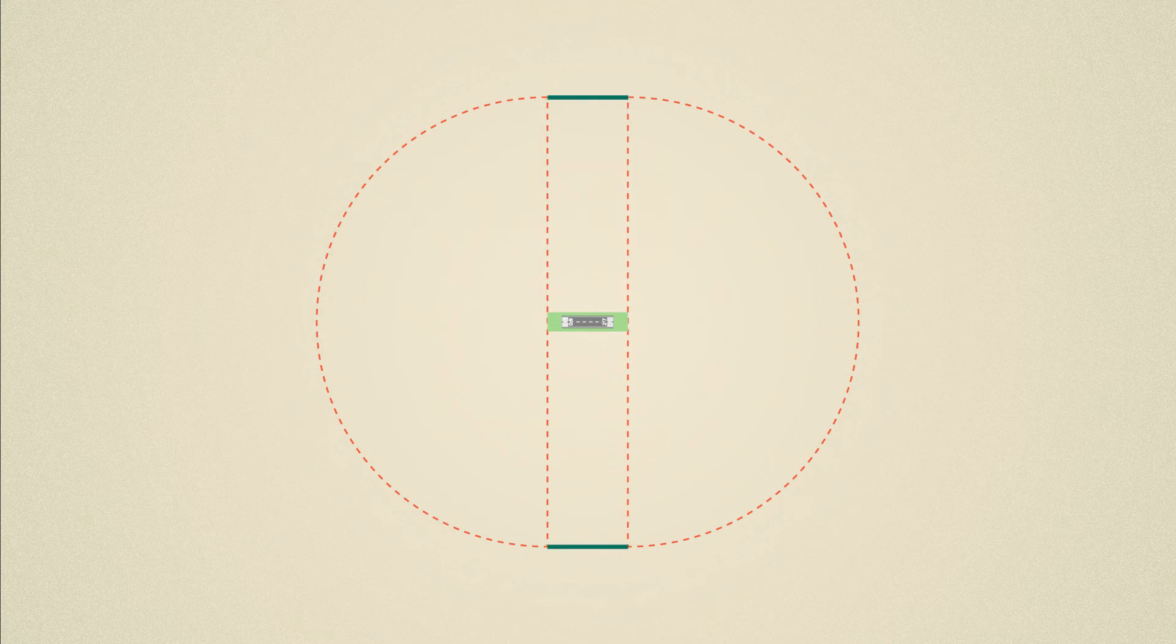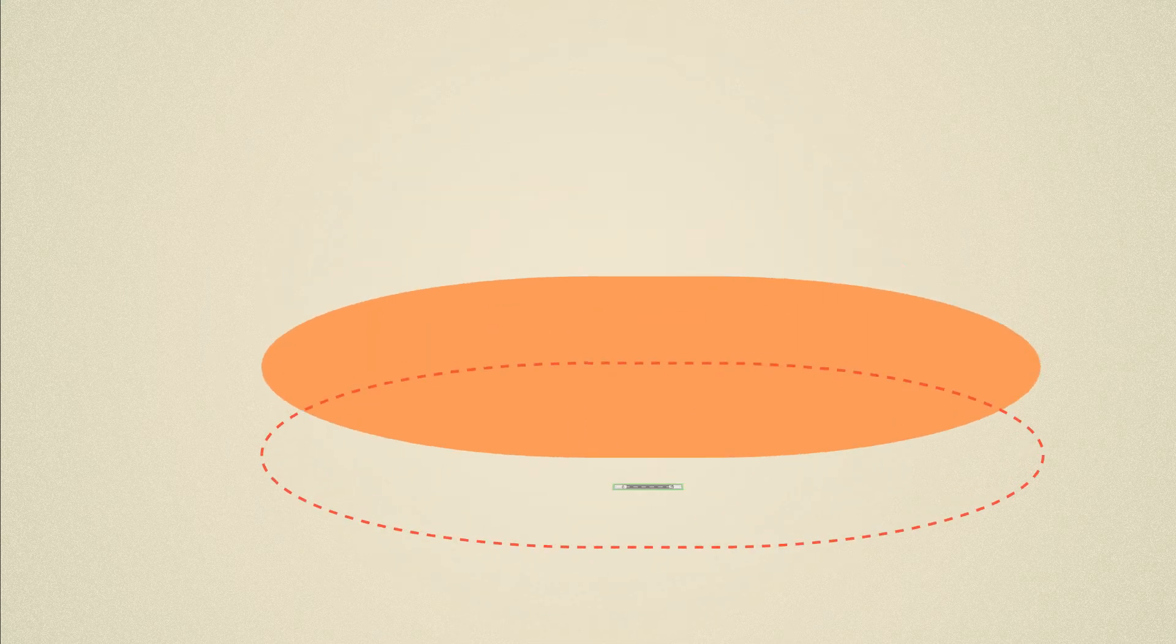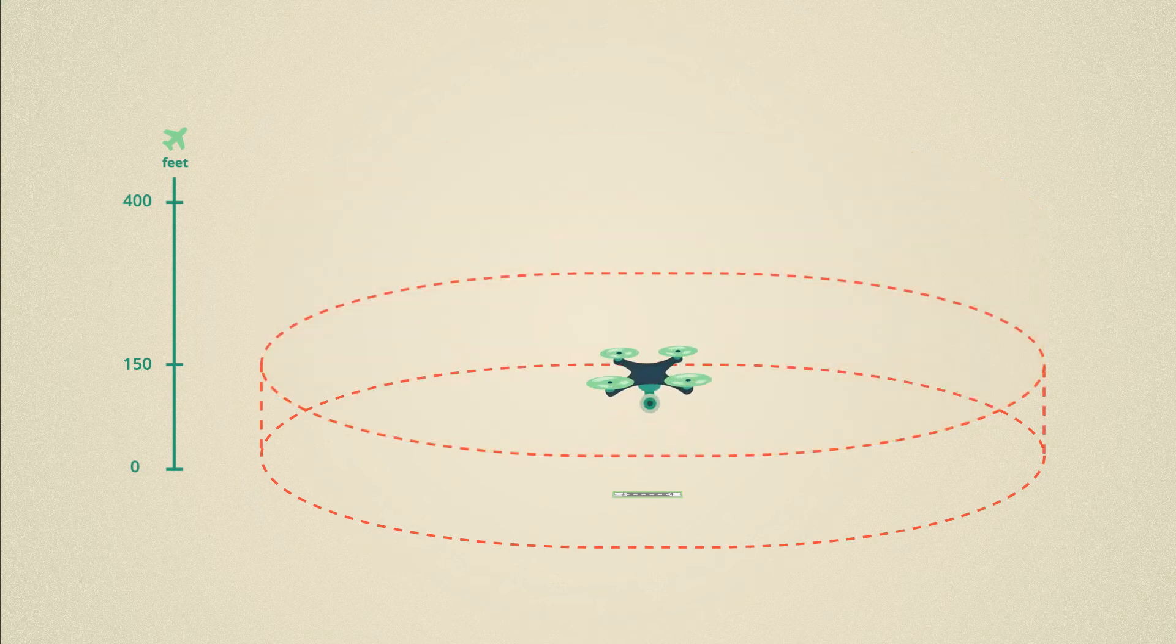The two semicircles are joined by a straight line from the point abeam the end of the runway. This forms an area where remote aircraft can fly to a maximum height of 150 feet or 45 metres.